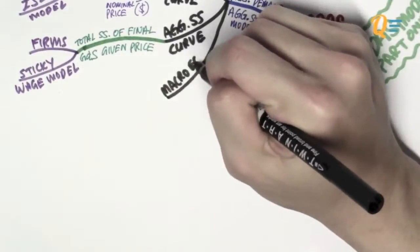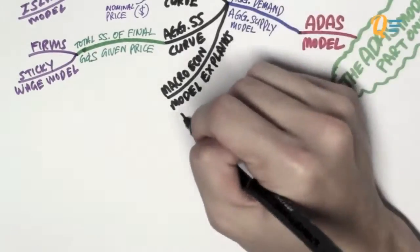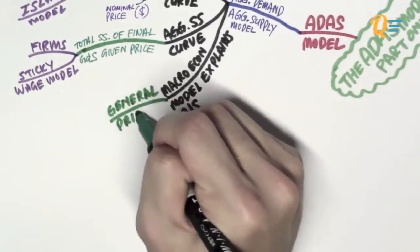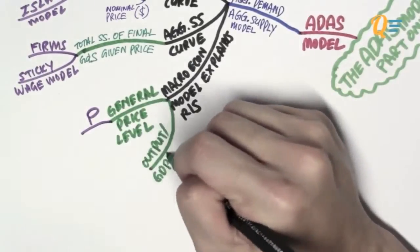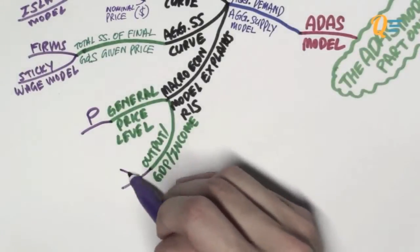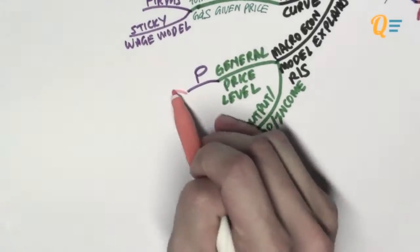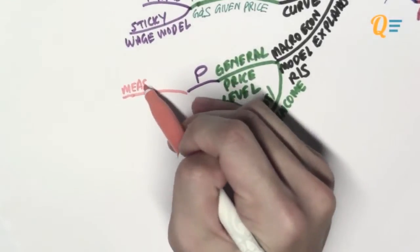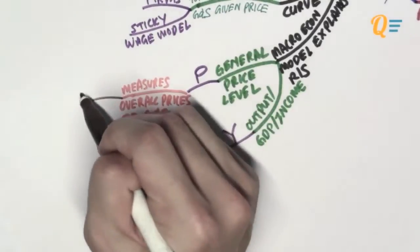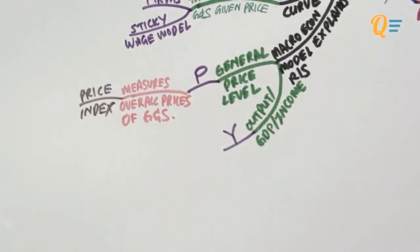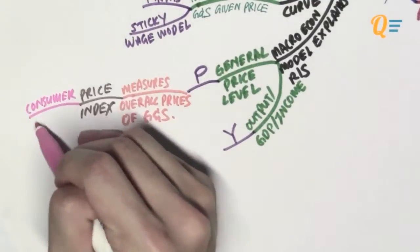Basically, the ADES model is a macroeconomic model that explains the relationship between the general price level, which we denote as P, with the output GDP or income, which we denote as Y. The general price level, or P, measures the overall prices of goods and services in an economy. Countries use a price index to understand what the price level in an economy is.